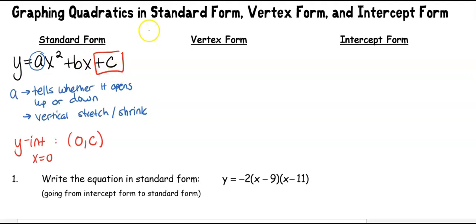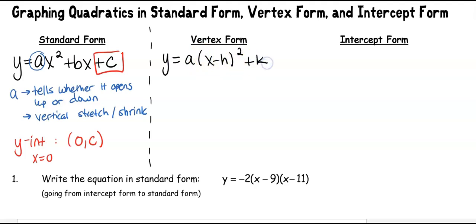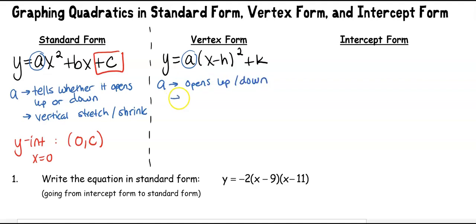The next form is vertex form. The general form is y equals a times (x minus h) squared plus k. All the properties of 'a' are still the same — it still tells us whether it opens up or down and whether there's a vertical stretch or shrink.